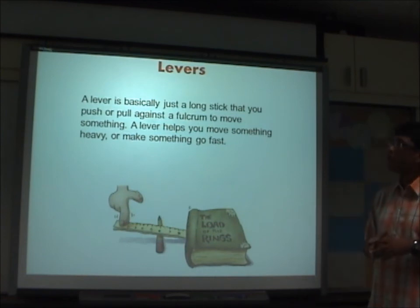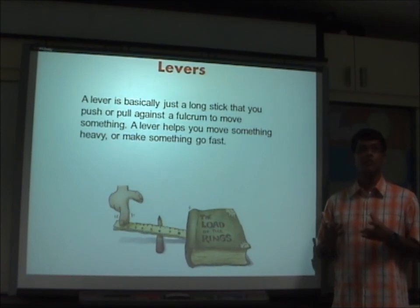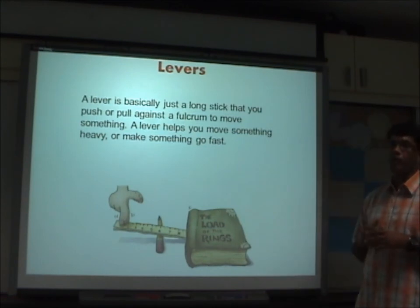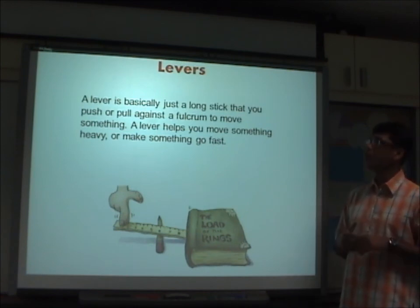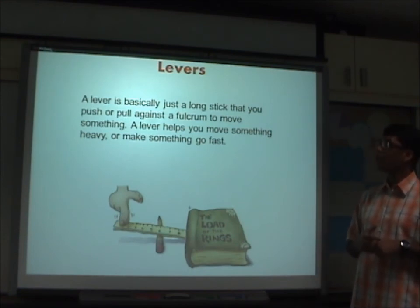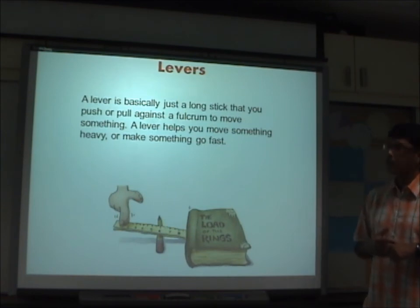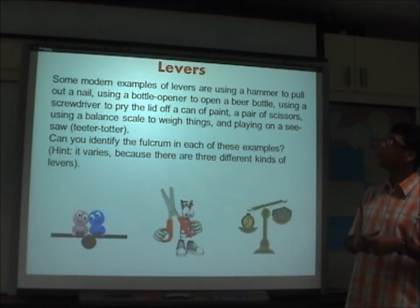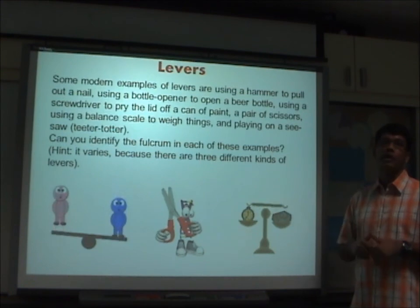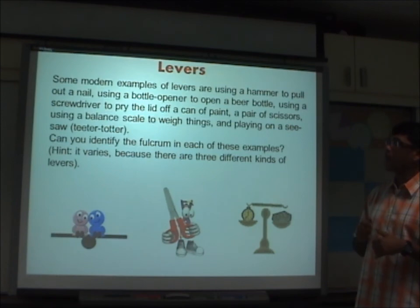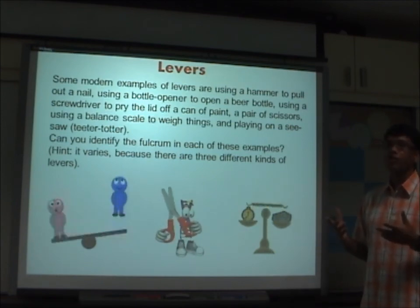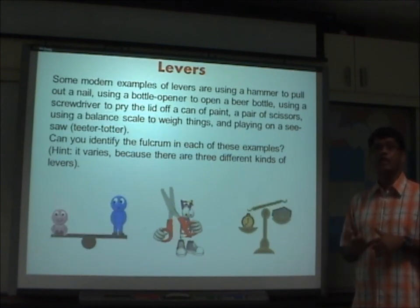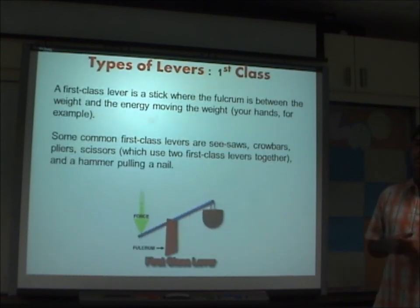We've more or less covered the motions and functions of mechanisms. Now we'll go directly into the different types of mechanisms — starting with the lever system. You may have covered lever systems in primary school or secondary one and two, so this is a recap. A lever is basically a long stick that you push or pull against a fulcrum to move something — it helps you move something heavy or make something go fast. Modern examples include using a hammer to pull out a nail, a bottle opener to open a cap, a screwdriver to pry a paint can lid, and scissors.